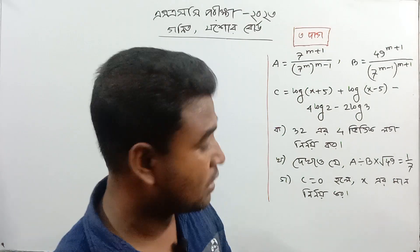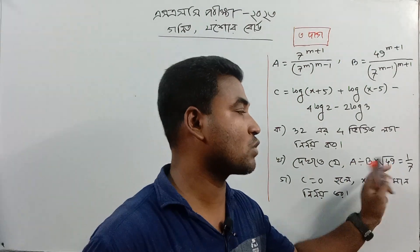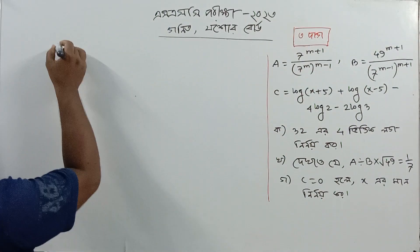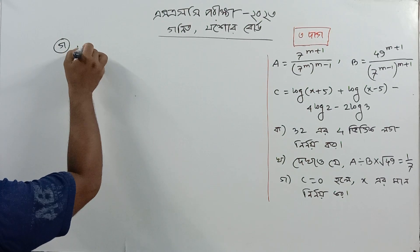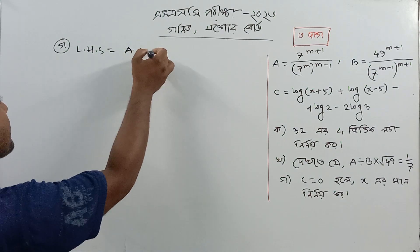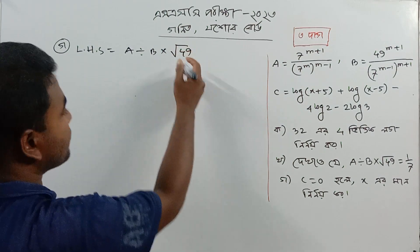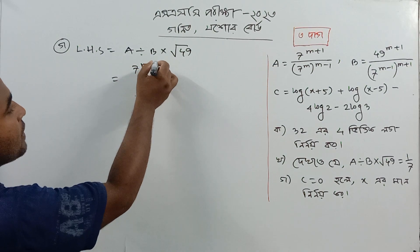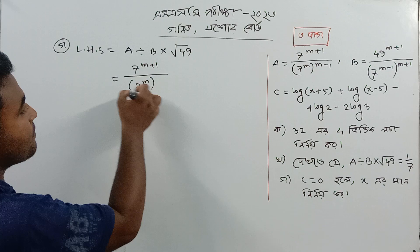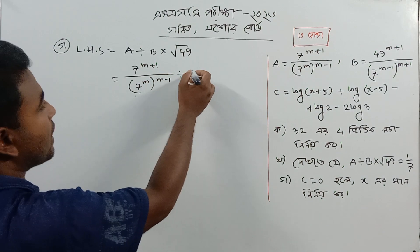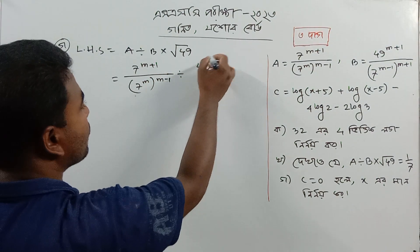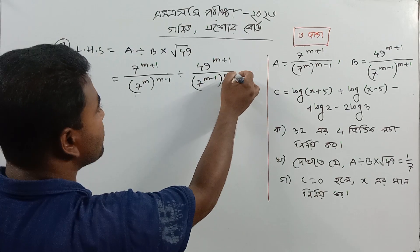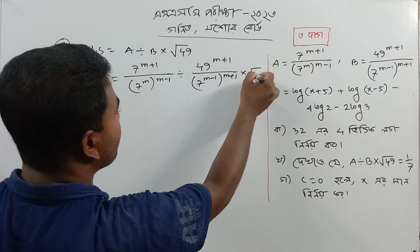A, B into root of 49. If A, B to root of 49, we will answer 1 by 7. Now we bring A to the left-hand side: A to B into root over 49, to make it m plus 1 into root of 49.